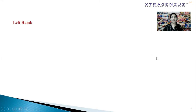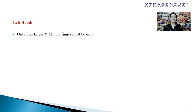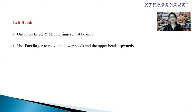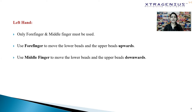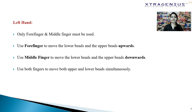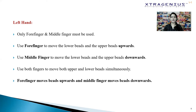When it comes to bead movement, there are certain principles to follow. While using your left hand, only your forefinger and middle finger must be used. Use your forefinger to move the lower beads and the upper beads upwards, and your middle finger to move them downwards. Use both fingers to move both upper and lower beads simultaneously. The general principle is that the forefinger moves beads upwards and the middle finger moves beads downwards.